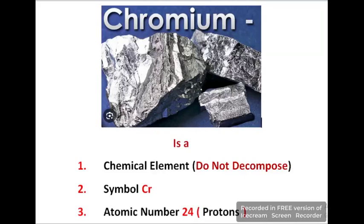Chromium is a chemical element. A substance that cannot be decomposed or transferred into other chemical substances by ordinary chemical processes is called a chemical element. Chromium is denoted by the symbol Cr and its atomic number is 24. Atomic number means the amount of protons.